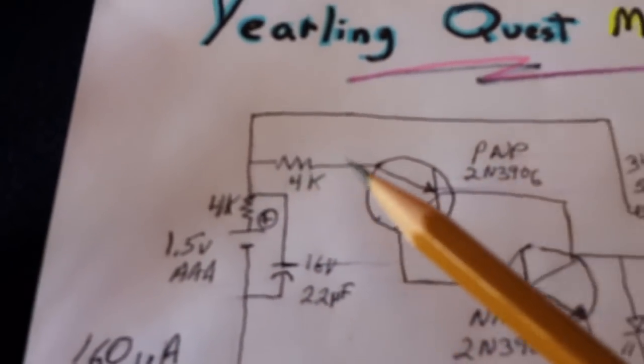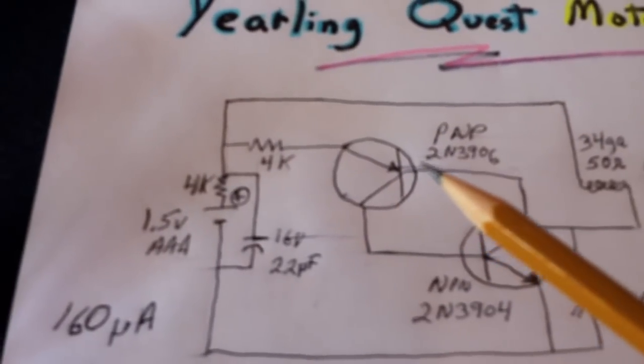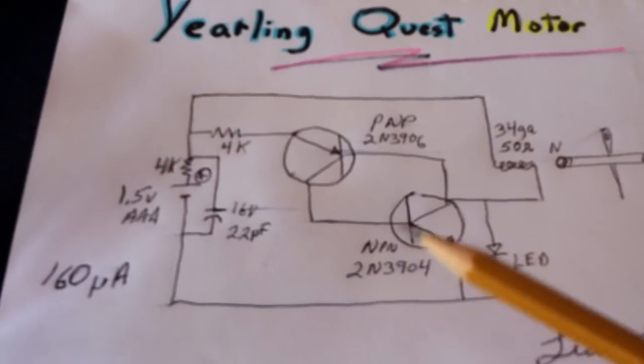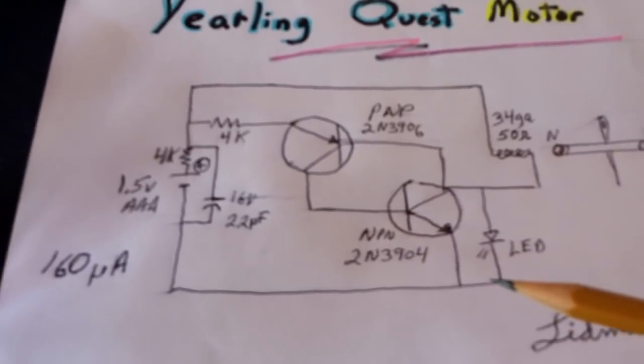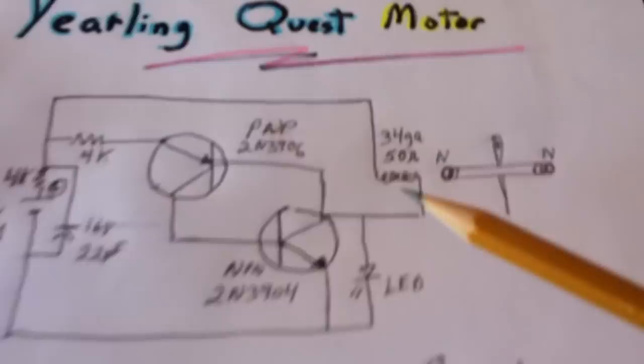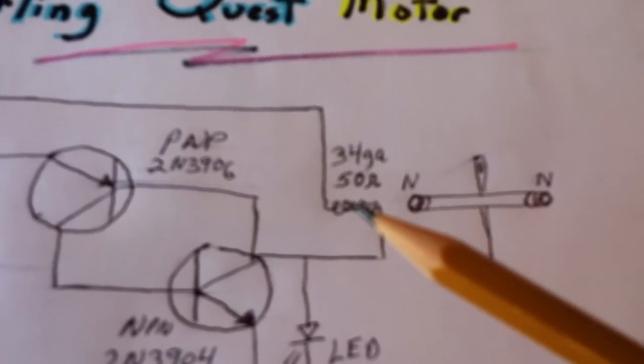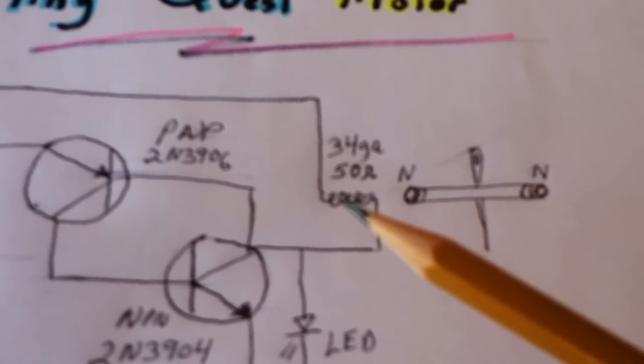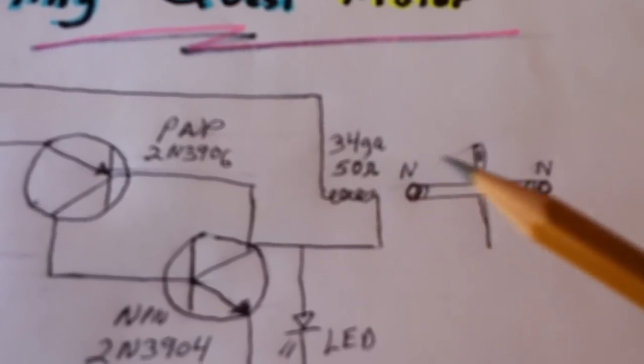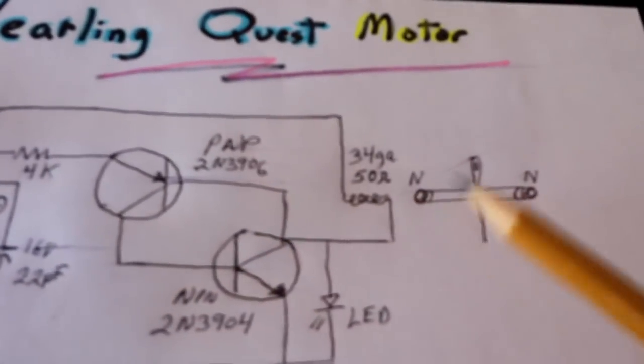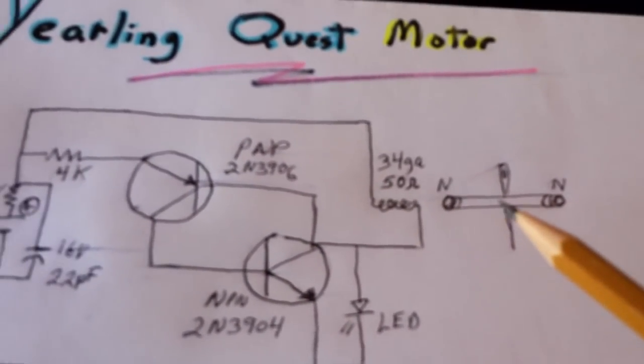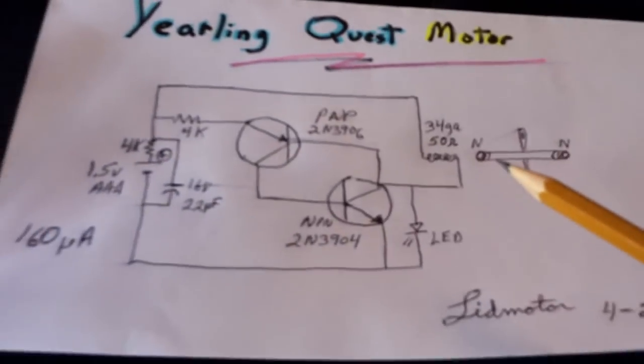And then there's a 4K resistor going to the emitter on the PNP, and that's the only other component. The LED is between the collector and the ground, the negative rail. And then this coil is not the superfine wire. It's 50 ohms, 34 gauge, to spin that two-pole rotor around. I had to go this direction to get that rotor spinning fast enough and become stable enough for this to work.